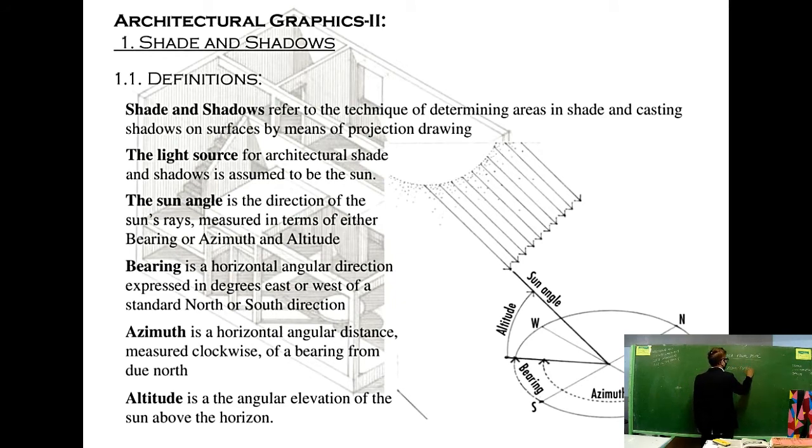The light source for architectural shade and shadows is assumed to be the sun. The sun angle is the direction of the sun rays, expressed in terms of either bearing, azimuth, or altitude. Bearing is a horizontal angular direction expressed in degrees east or west of a standard north or south direction. Azimuth is a horizontal angular distance measured clockwise of a bearing from due north. Altitude is the angular elevation of the sun above the horizon.